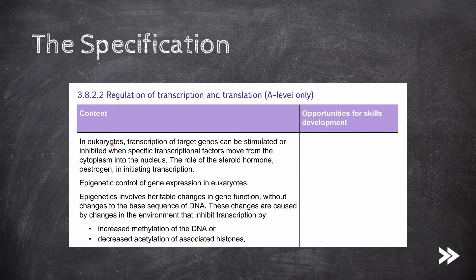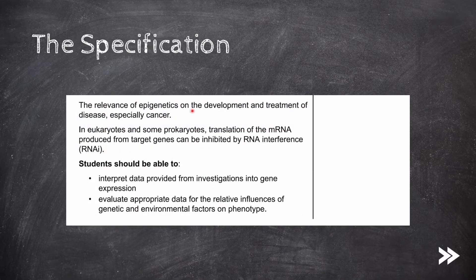First of all, we should know that in eukaryotes, transcription of target genes can be stimulated or inhibited when specific transcriptional factors move from the cytoplasm into the nucleus. We should know about the role of the steroid hormone estrogen in initiating transcription. Then we should know the epigenetic control of gene expression in eukaryotes and be able to define epigenetics. We should know how changes in gene function are caused by changes in the environment that inhibit transcription by increased methylation of the DNA or decreased acetylation of associated histones. We should also know the relevance of epigenetics on the development and treatment of disease, especially cancer. Note that I will cover this in my next video when I talk about gene expression and cancer. And finally, we should know how in eukaryotes and some prokaryotes, translation of the mRNA produced from target genes can be inhibited by RNA interference, also abbreviated to RNAi.